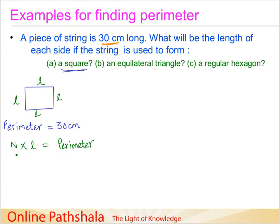So for N, that is number of sides, I am going to write 4. I do not know the length, but I do know that 30 cm is my perimeter. When I divide by 4 on both the sides, what I get is L equals 4 divided by 30, which is 7.5 cm.